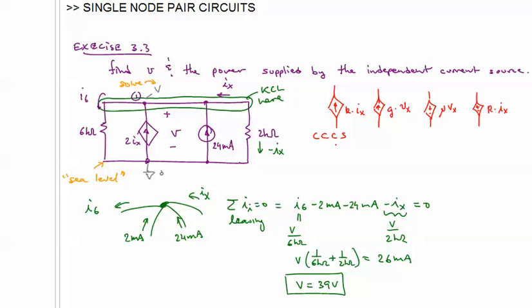So it's a current source, but it's controlled by a current, the current ix. The second one is called a voltage-controlled current source. Current-controlled, voltage-controlled.